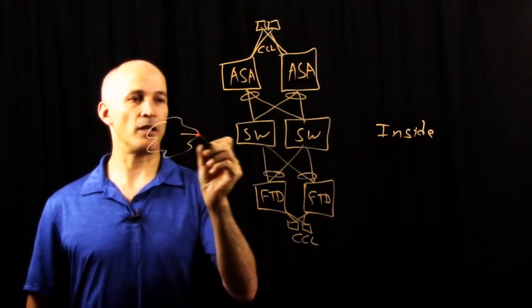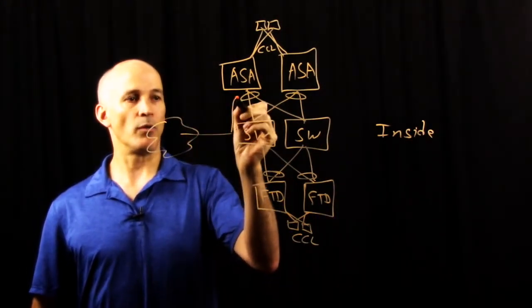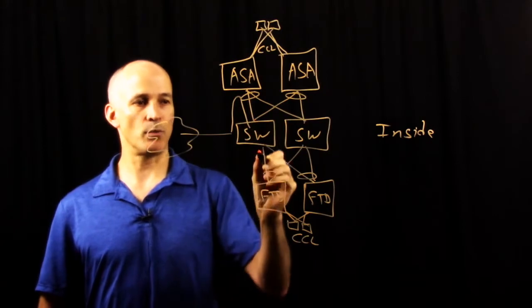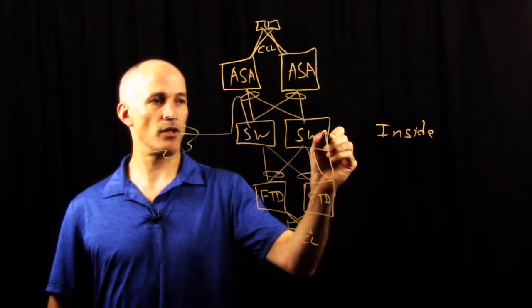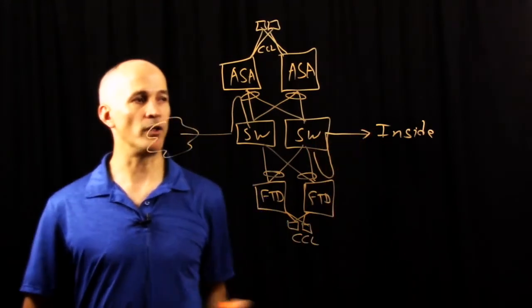Starting from the outside, packets would flow into your switch, go through the cluster, come back to the switch. From the switch, they would flow through your Firepower Threat Defense cluster and back to the switch, and then onto the inside network.